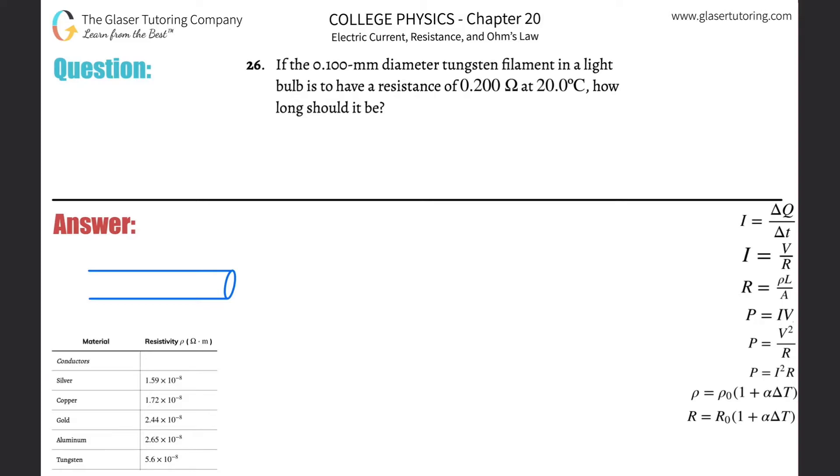Number 26: If the 0.1 millimeter diameter tungsten filament in a light bulb is to have a resistance of 0.2 ohms at 20 degrees Celsius, how long should it be? Alright, so first things first, let's write down some of the things that we know.